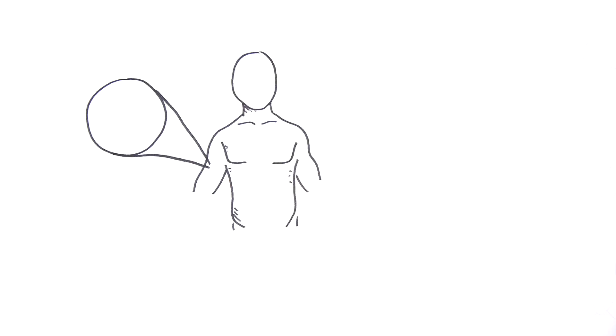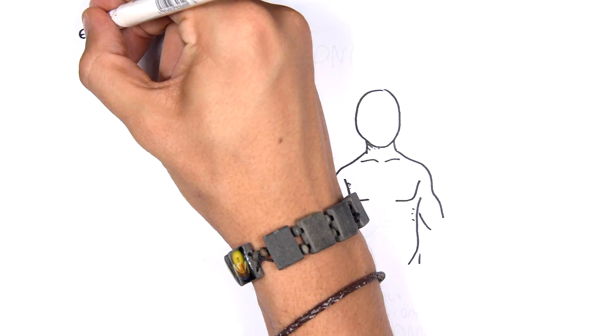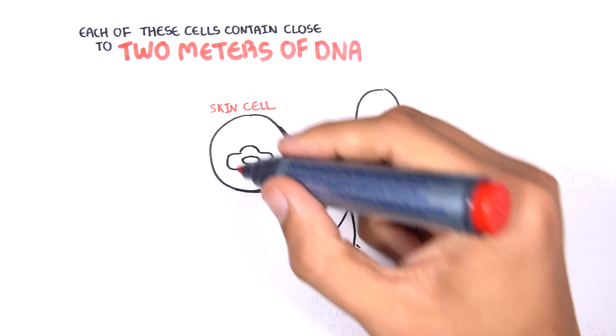There are over 100,000 skin cells in one square centimeter of skin. Each of these cells contain close to 2 meters of DNA, which contain our genetic information.